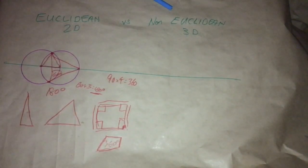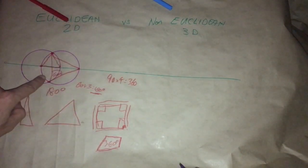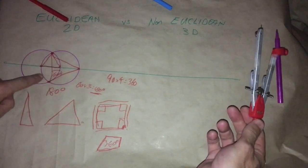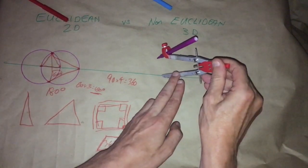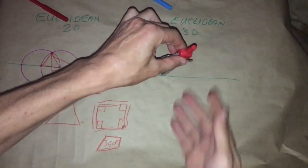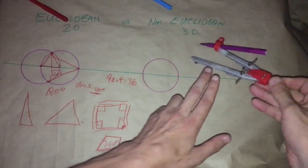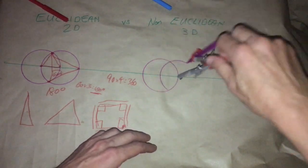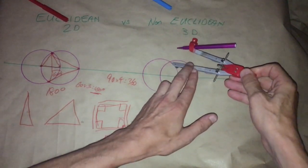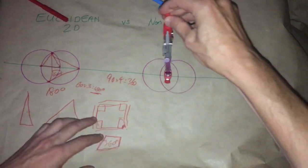But what about non-Euclidean three-dimensional space? To do a two-dimensional triangle we had two circles. Now if we want to do a good representation of a three-dimensional triangle, you need three circles. We have the vesica and now we're going to add one more, what we call the trinity.